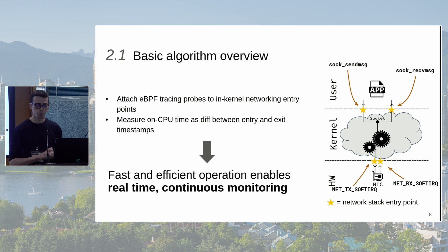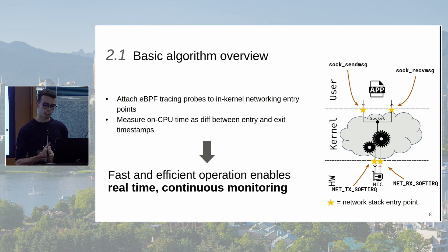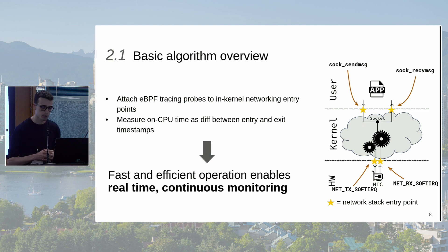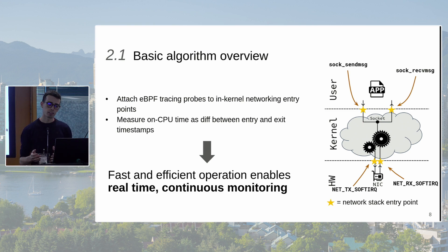At a high level, Netto works by first identifying the main entry points to kernel networking — there are mainly four. Two are networking-related softqueues: the NET_RX softqueue pictured before, and the NET_TX softqueue which doesn't do much in Linux and is only invoked when a transmission attempt fails because the NIC was busy. The other two entry points are the socket receive and send operations.